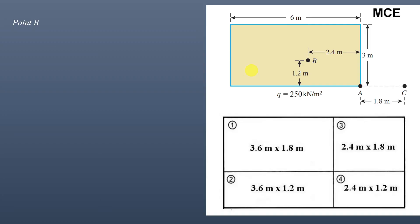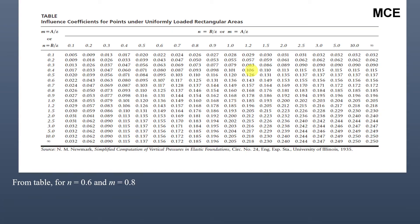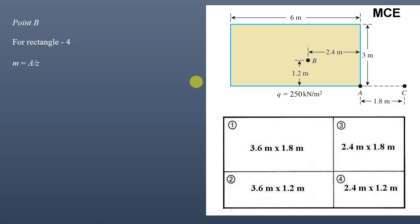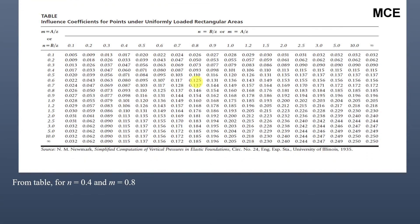For rectangle 3 (2.4 m × 1.8 m): m = 2.4/3 = 0.8 and n = 1.8/3 = 0.6. From the influence coefficient table, for n = 0.6 and m = 0.8, the influence coefficient I₃ = 0.125. For rectangle 4 (2.4 m × 1.2 m): m = 2.4/3 = 0.8 and n = 1.2/3 = 0.4. For n = 0.4 and m = 0.8, the influence coefficient I₄ = 0.093.